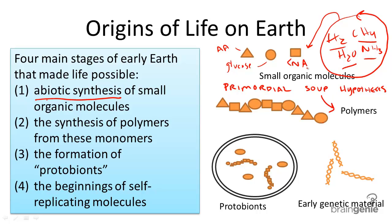Many scientists think that these small organic molecules developed and became more complex in terms of polymers, and that these polymers formed early genetic material like RNA and ultimately DNA. Eventually, early cells — protobionts containing these molecules — formed with a membrane surrounding them.